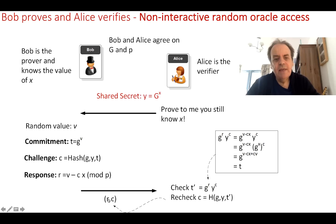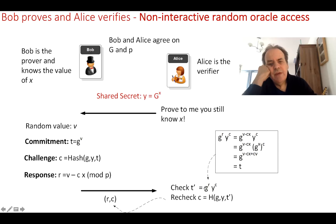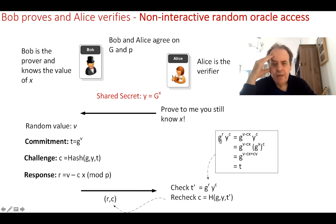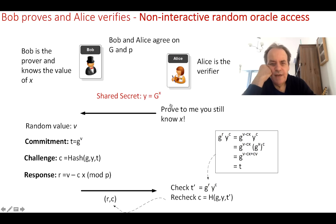Bob returns the response r and the challenge c. On the other side, Alice checks by taking g raised to the power of r and y raised to the power of c. This gives g^(v - c·x) · y^c. Since y = g^x, y^c = g^(x·c).